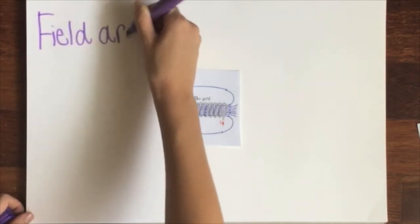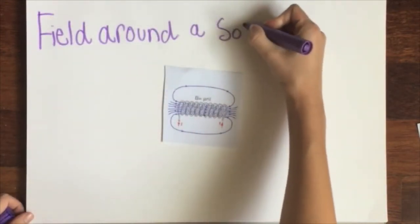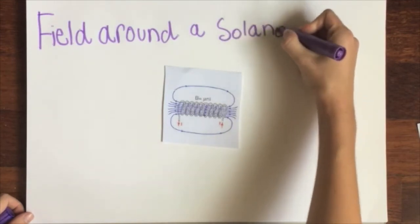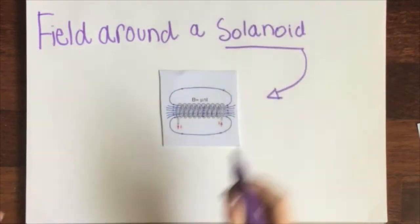And this is a field around a solenoid. It contains a uniform magnetic field. The solenoid is a type of electromagnet. Its purpose is to generate a controlled magnetic field.